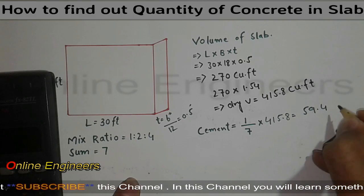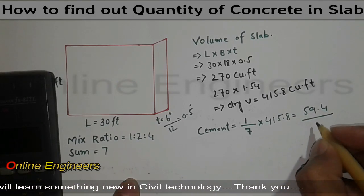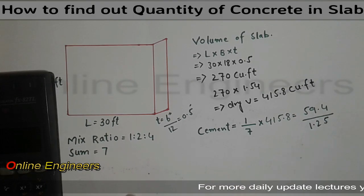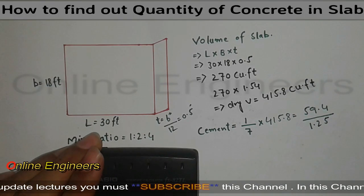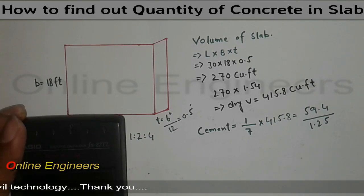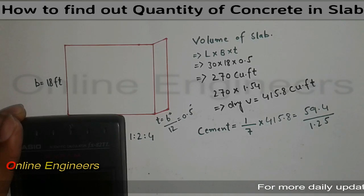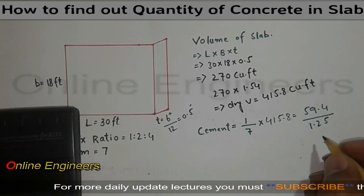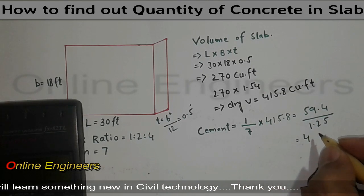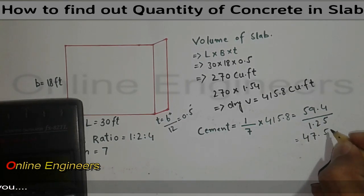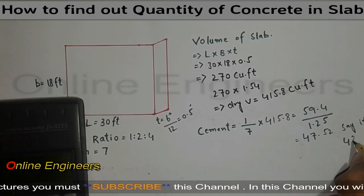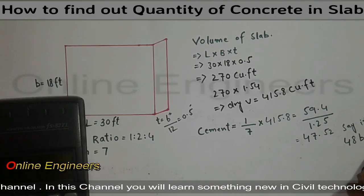That's 59.4 divided by volume of one bag, which is 1.25. 59.4 divided by 1.25, so these are number of cement bags: 47.52, say 48 bags.